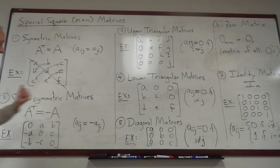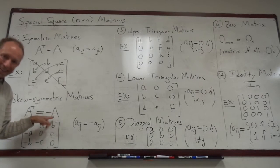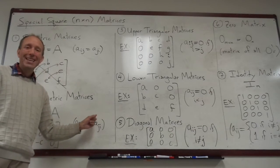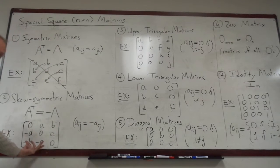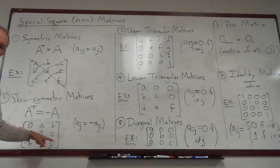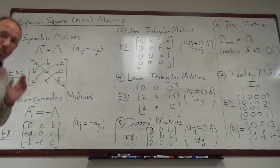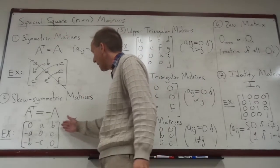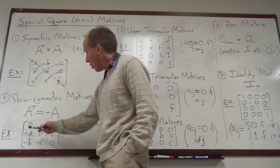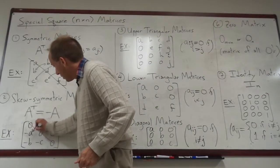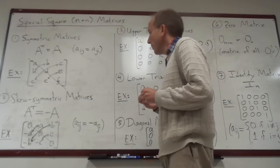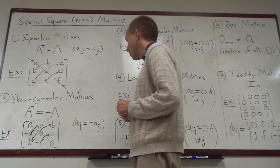Skew symmetric matrices are very similar. This time, A transpose equals negative A, which just means that the ij entry is the negative of the ji entry. Here's a three by three example of that. Notice the zeros on the main diagonal. For a skew symmetric matrix, you must have the zeros on the main diagonal. So there are zeros on the main diagonal here. And then across the main diagonal, the numbers are the negatives of each other. So these are kind of negatives, like that. Okay. And that will always be that way for a skew symmetric matrix.